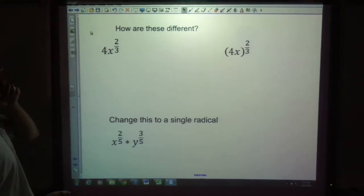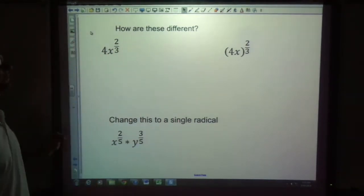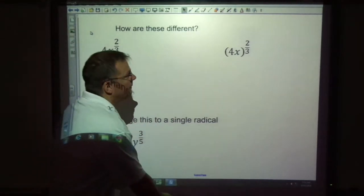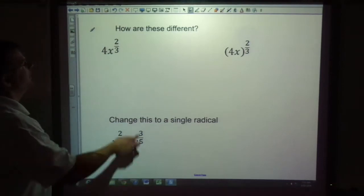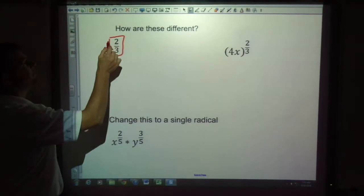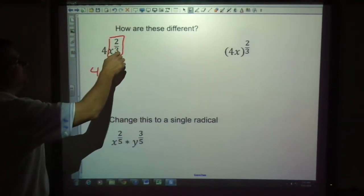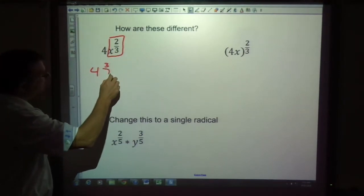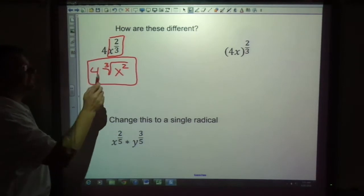Here's something to take care of. How are these two problems different? Four x to the two thirds? Four x to the two thirds? They sound the same, but they are different. If we were to write them using radical, in this one, the only part that's being raised to the two thirds is the x. So the four can stay along for the ride. This needs to change to the cube root of x squared.